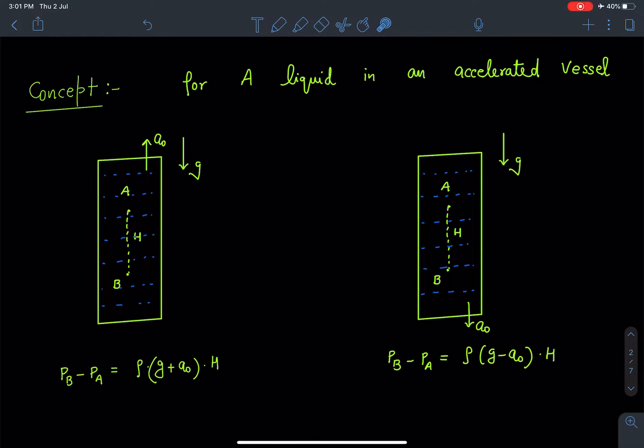One is g_effective where you will be writing vector g as g_effective as vector g minus vector a_vessel, or you can draw the free body diagram from the vessel itself and write the equation. You will be obtaining this result.